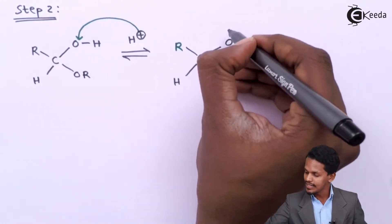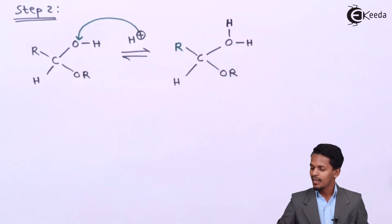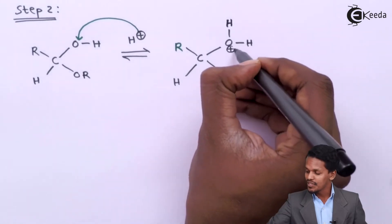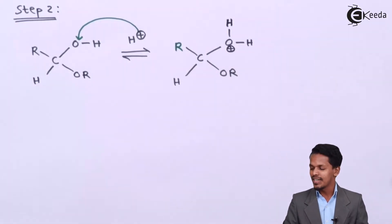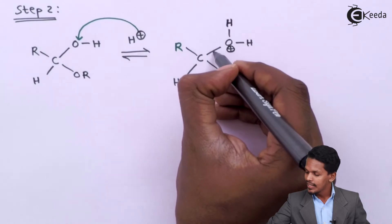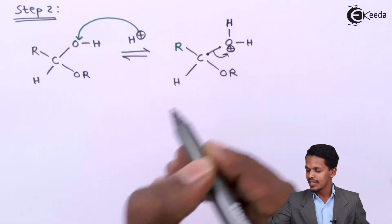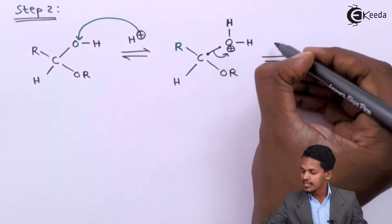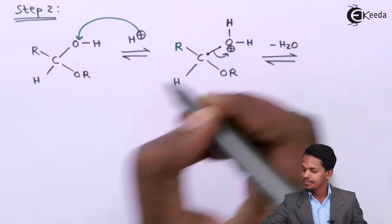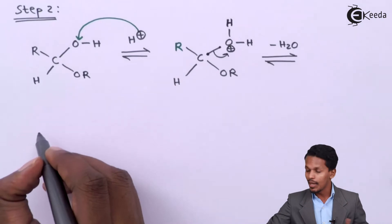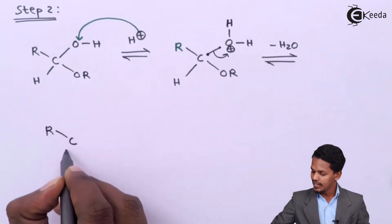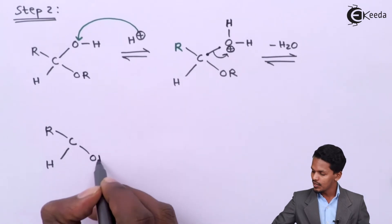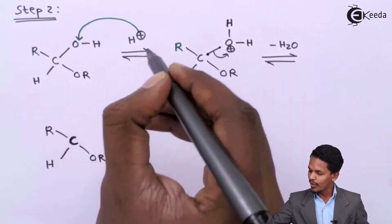In this complex the oxygen acquires three valency and therefore a positive charge, making it very unstable. As a result, the electron pair between carbon and oxygen is used to eliminate water (−H₂O), and the product formed is a carbocation RCH(OR)⁺, where the carbon carries the positive charge.